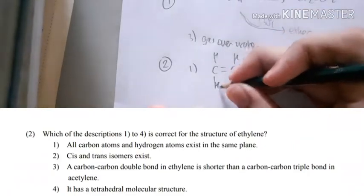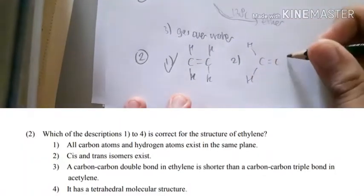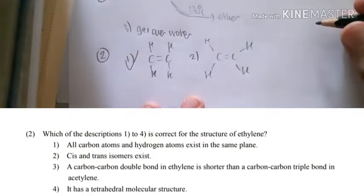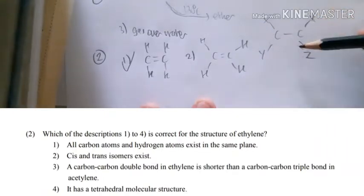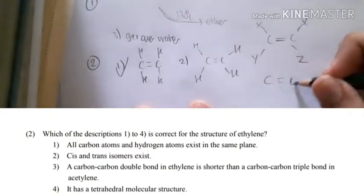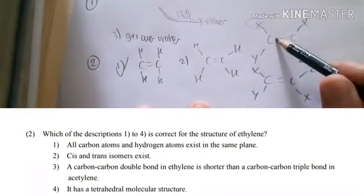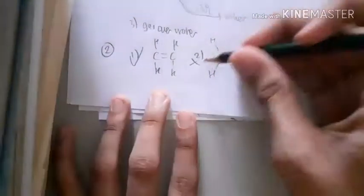Cis and trans isomers. That is not true because cis expects you to have one that is the same. For example, if you have this one, this is cis—you have at least one pair the same with a double bond. For trans, you flip this. Cis has the same groups on the same side of the double bond, trans has them diagonal. Cis and trans couldn't exist for the isomers of ethylene.